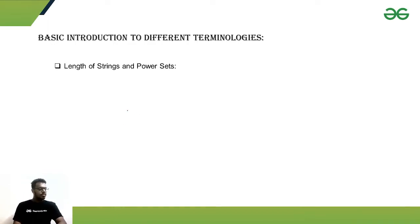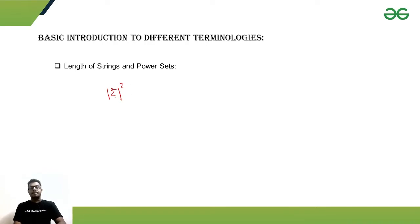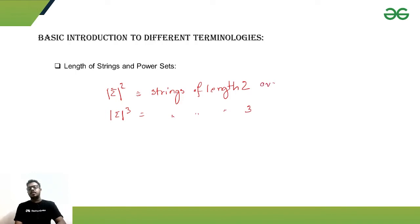The sigma notation with a power represents sets of strings of specific lengths. Sigma-squared represents strings of length 2; sigma-cubed represents strings of length 3, over the alphabet set sigma. Instead of an integer, we can also use a star — sigma-star.